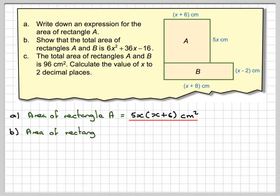Right, the area of rectangle B is going to be this length, (x - 2), times (x + 8).